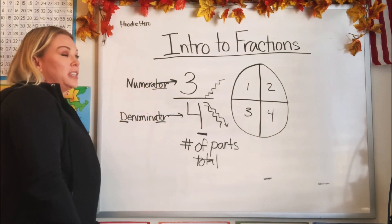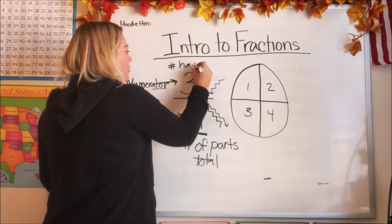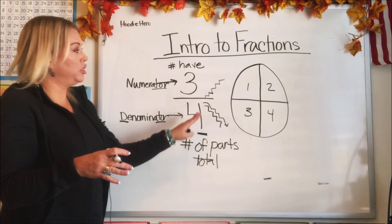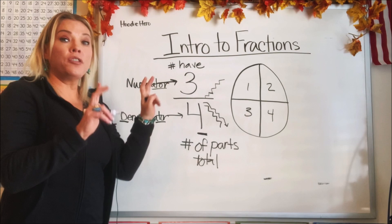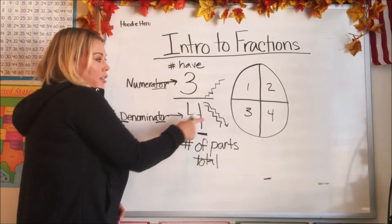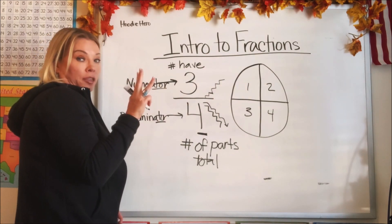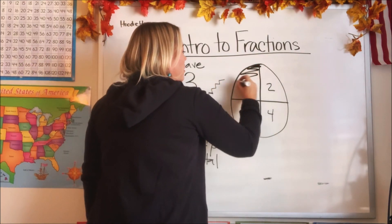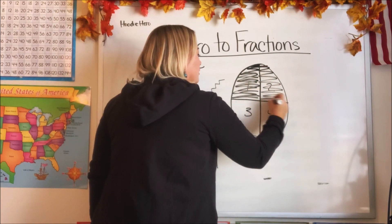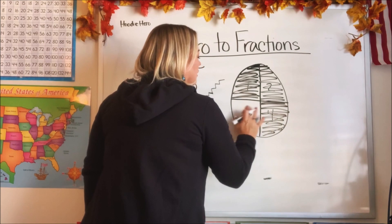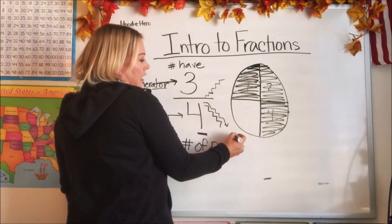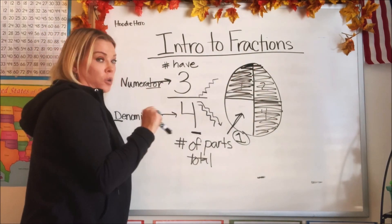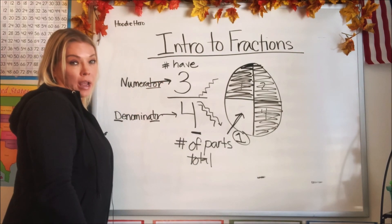Now let's look at the numerator. This tells us the number we have or the number we're talking about. If a problem says there were four total but she only ate three, three would be the numerator. So out of these four pieces, how many are we talking about? Three. We know there were four pieces total, and she ate three. Let's go ahead and color in three pieces to represent the three she ate. She ate three of the four pieces, so there's one piece left.